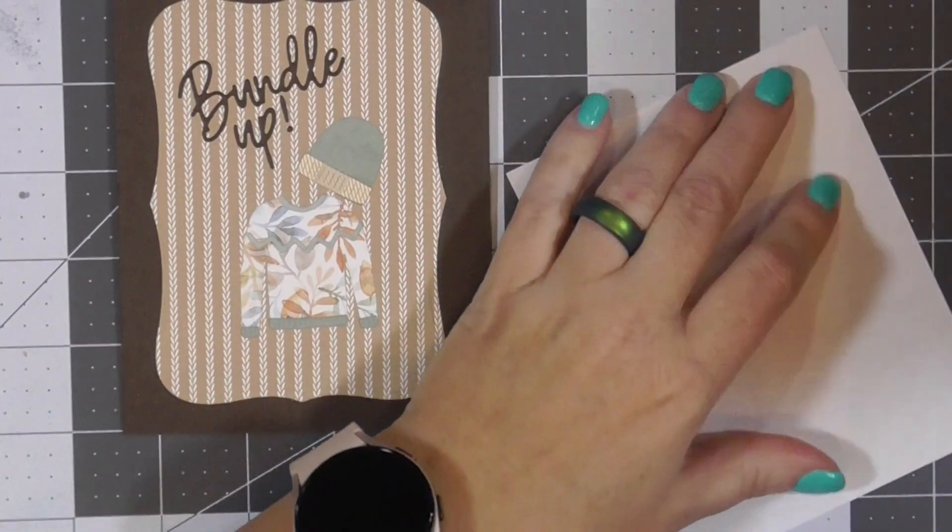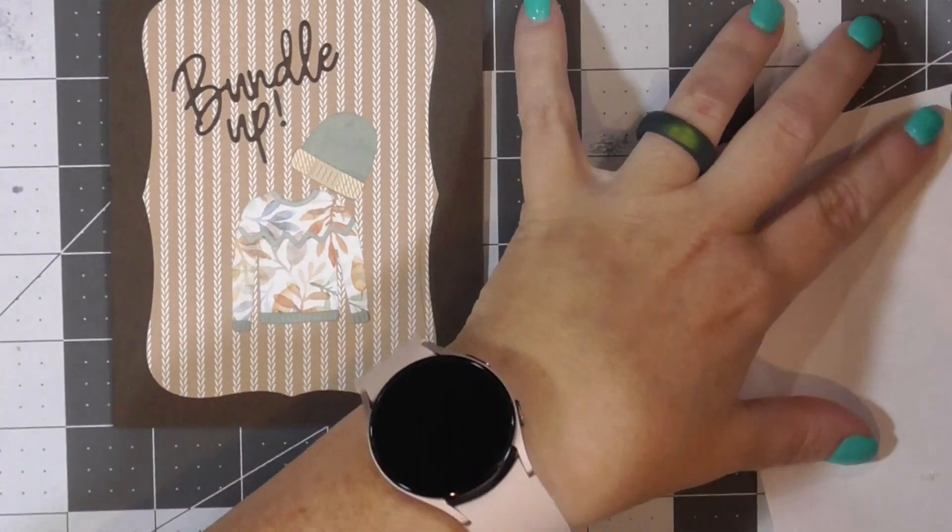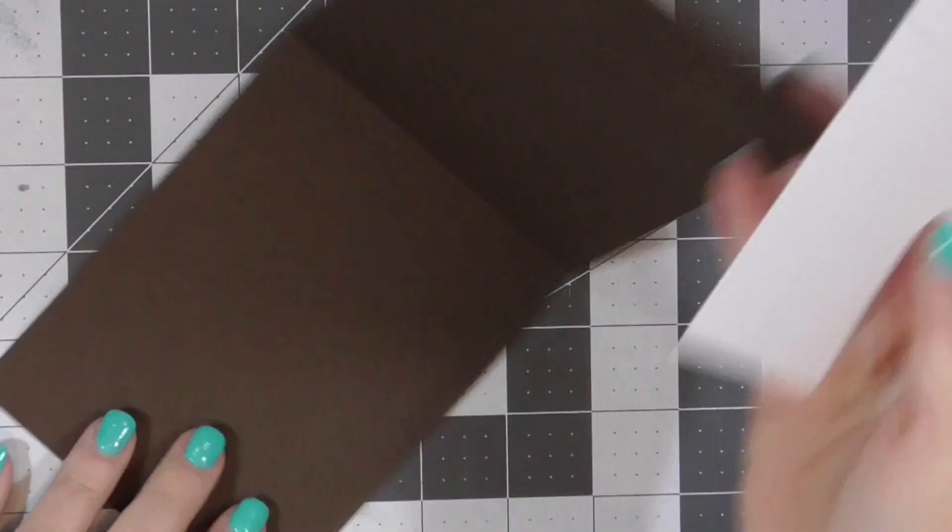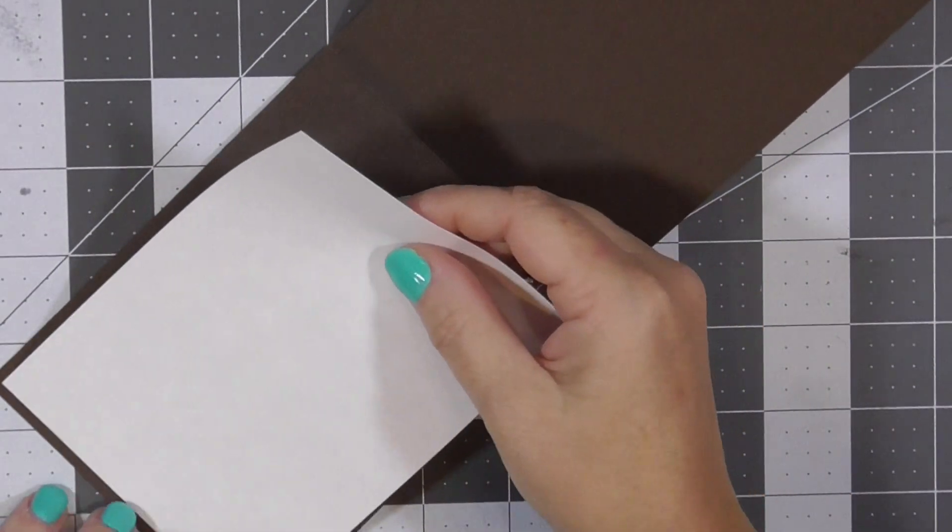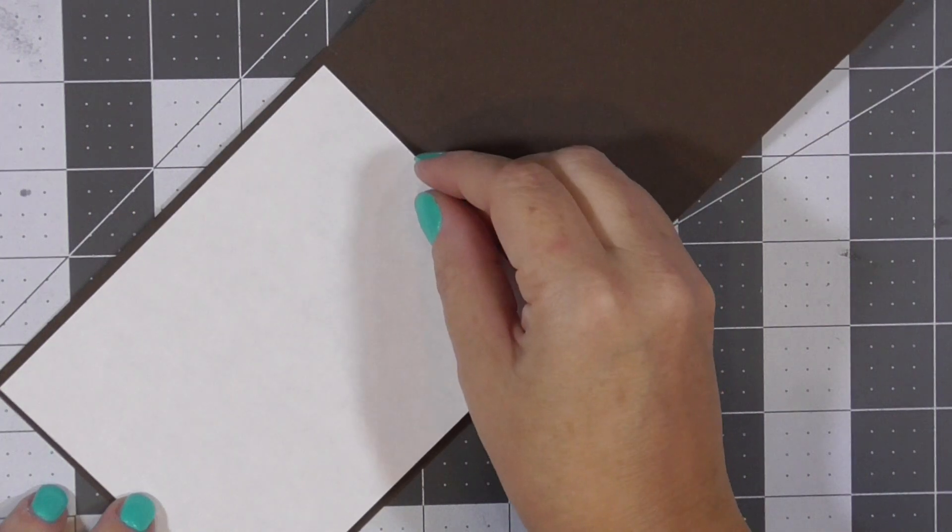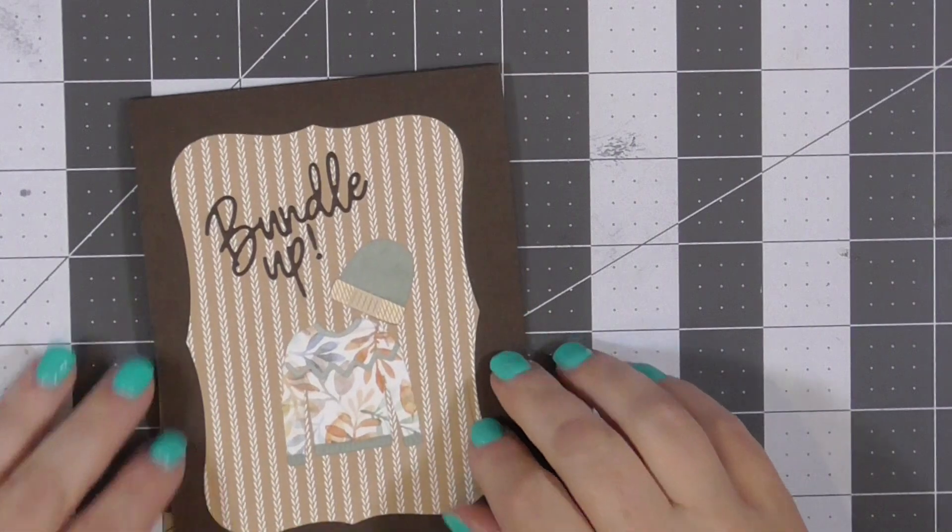And other than adding the white copy paper to the inside of the card, this card is done. Now you can see because of the paleness of the pattern paper for the sweater that I used, it really could have used a little ink blending along the edges. And that's something I will do later to zhuzh it up.